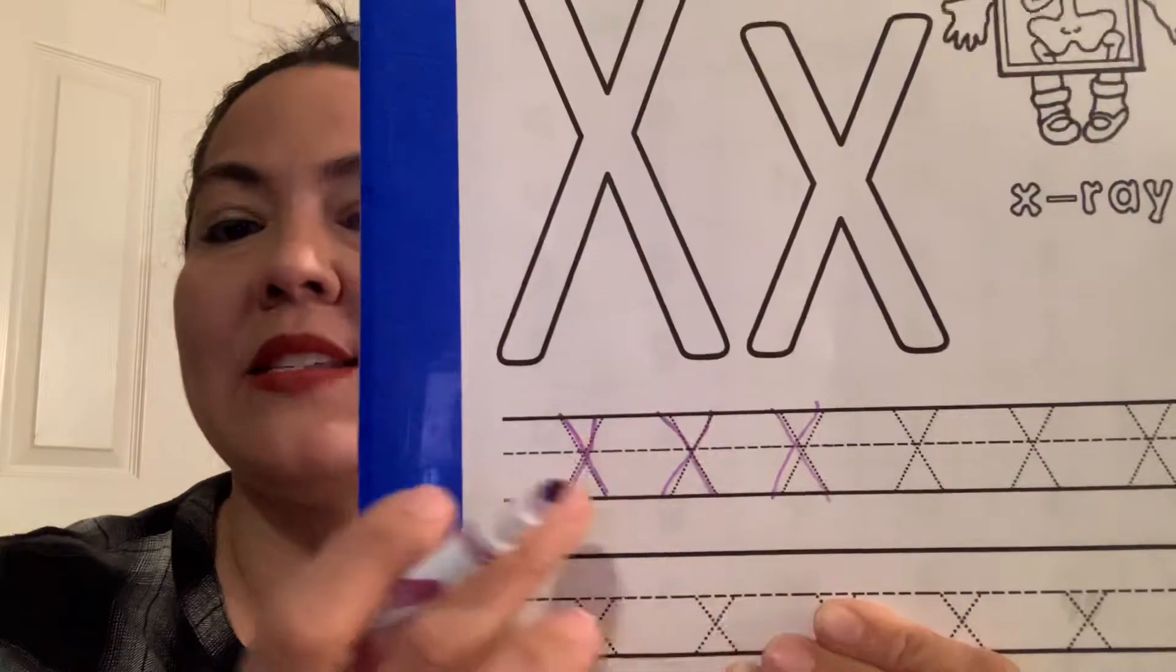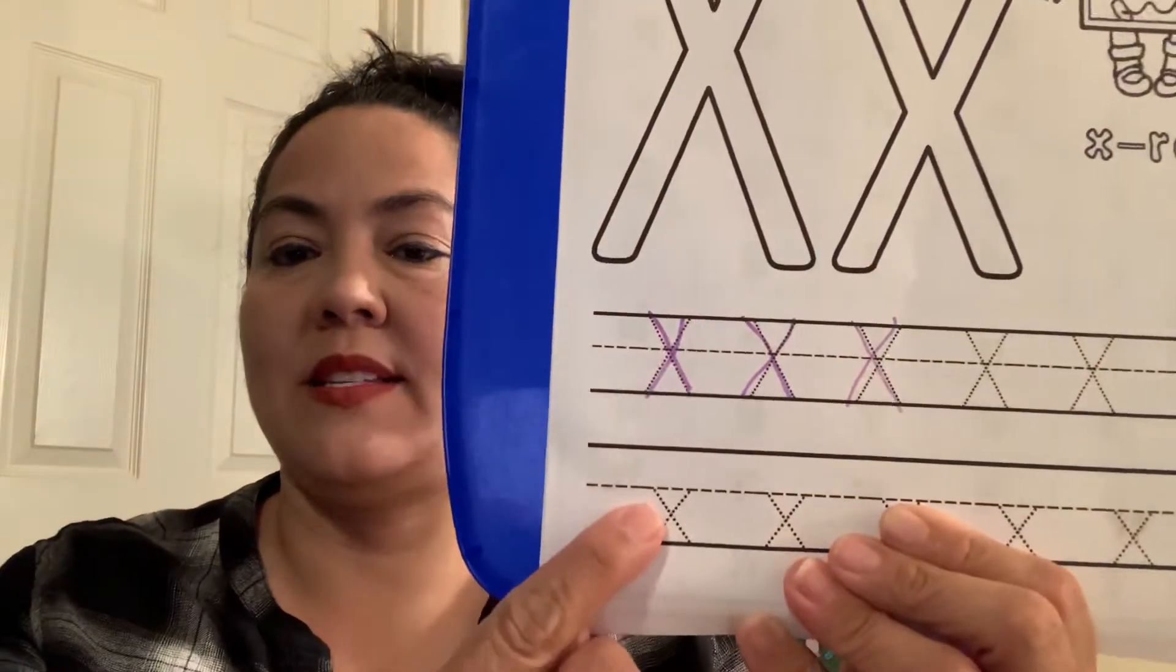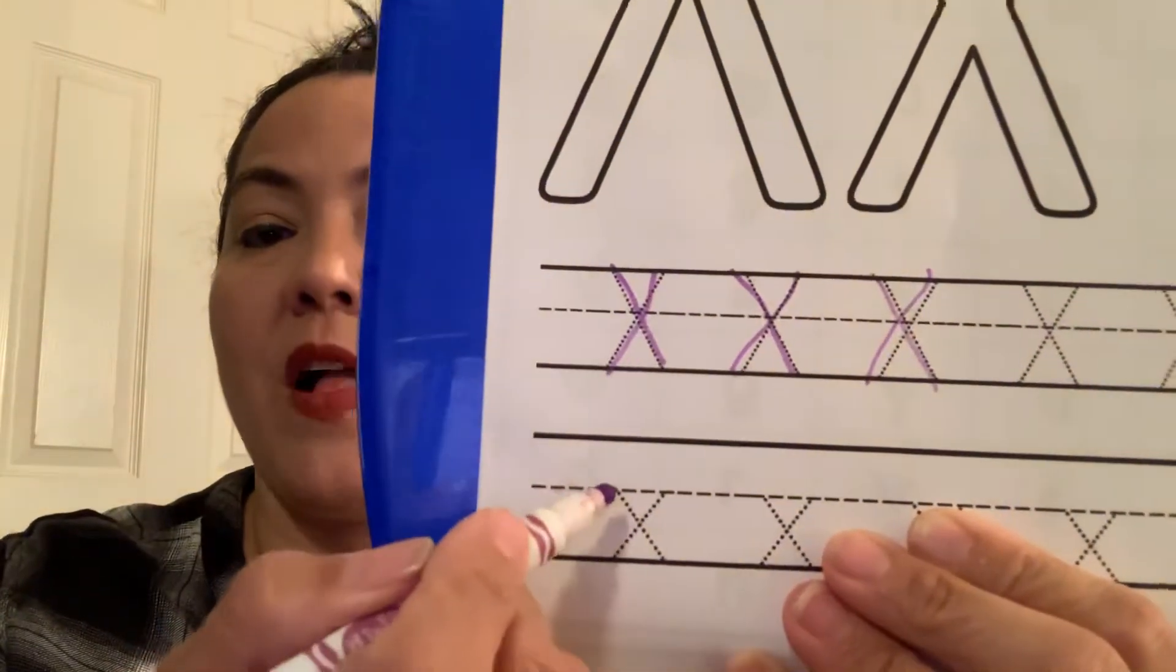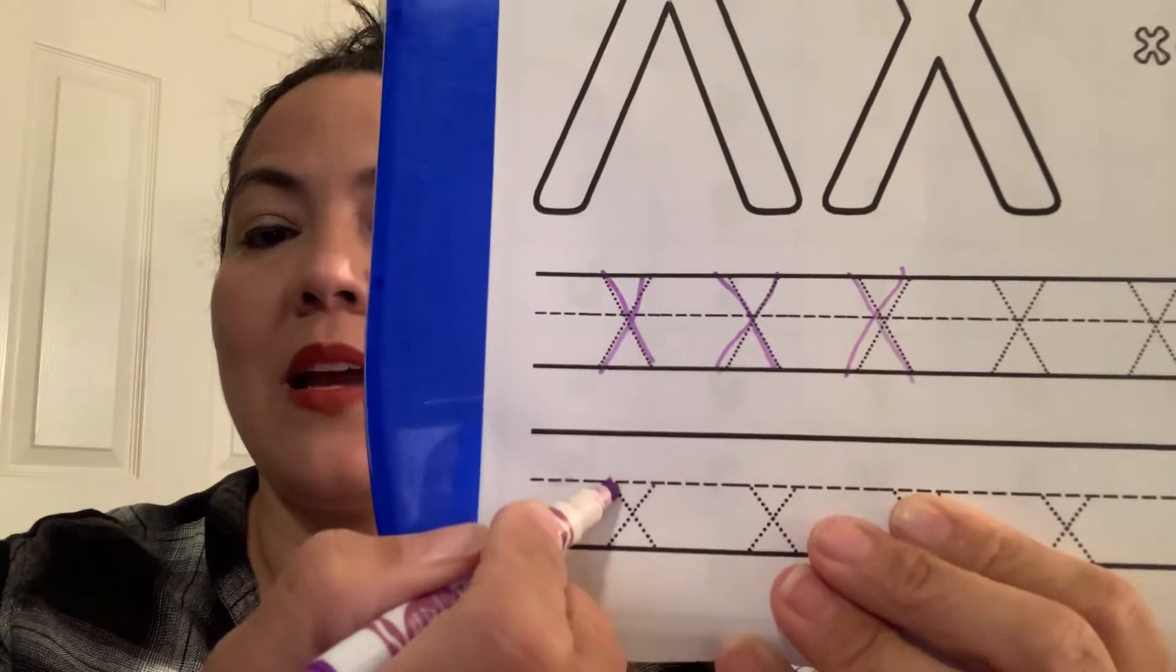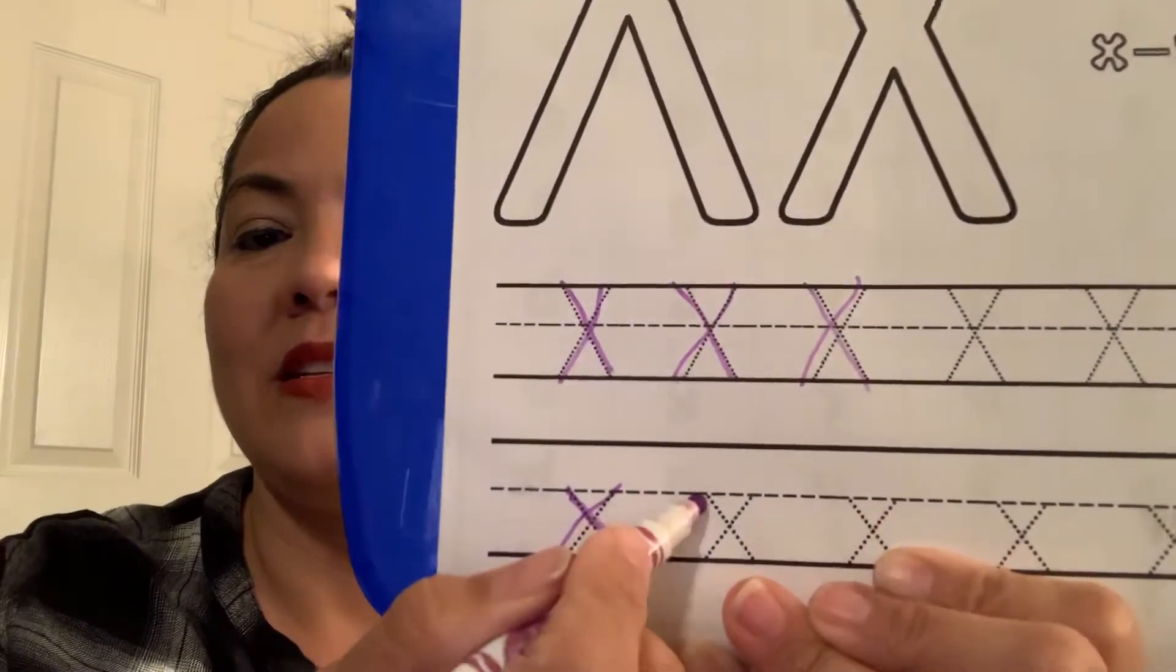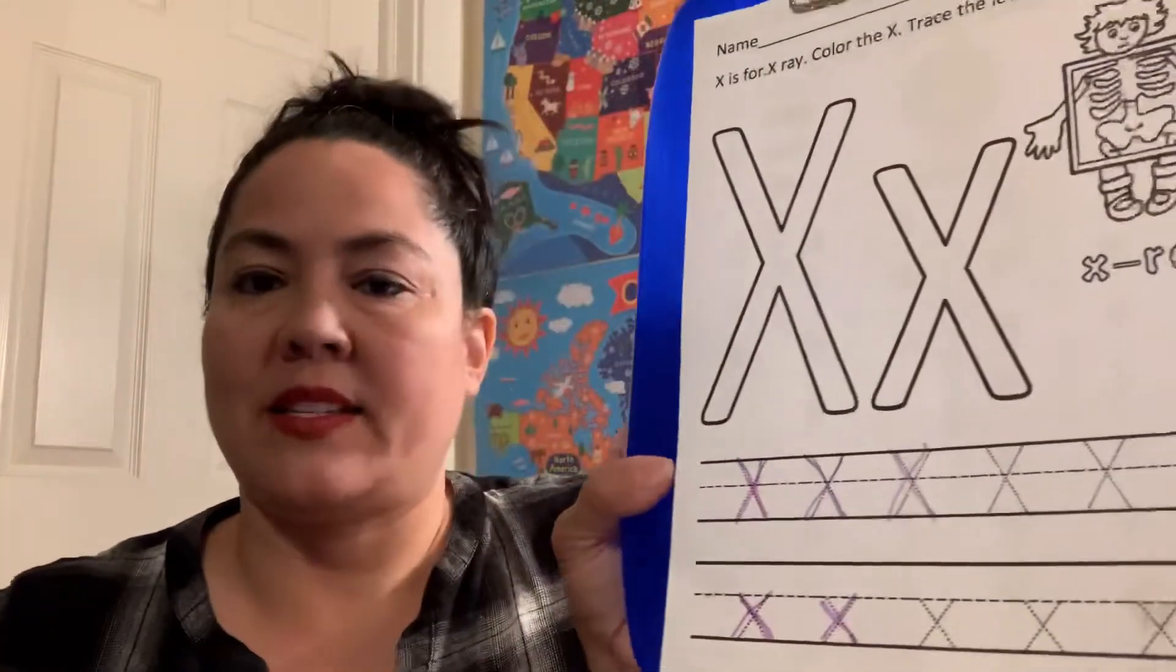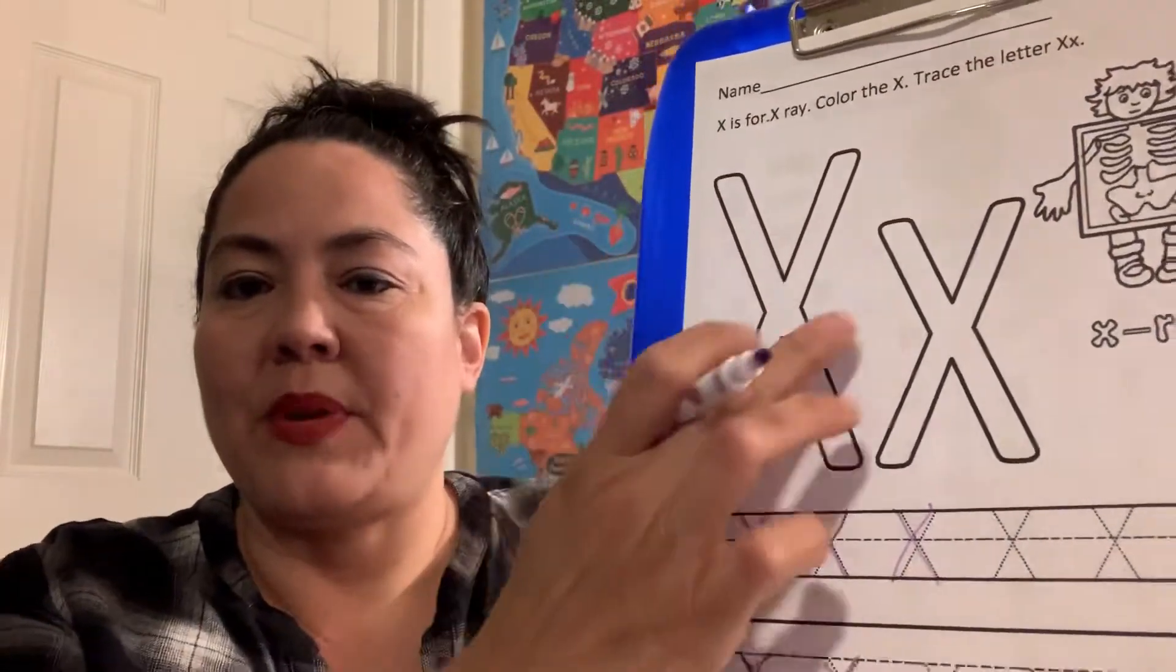Remember, uppercase X starts at the very top line, but lowercase X, does it start at the top, or does it start at the middle? It starts at the middle, right? And we're going to follow the dots. Just like big X, uppercase X. We're going to go down and across. Down and across. You guys are so smart. I know you're not going to have any trouble doing your uppercase and lowercase X's. You can also do these ones up here too. And you can also color your x-ray person if you want, your x-ray friend.